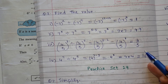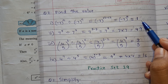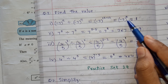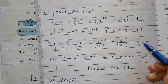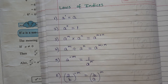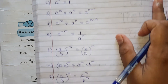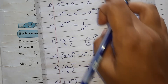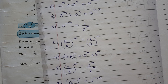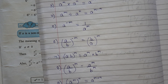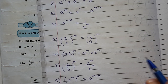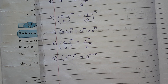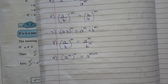When finding the value, there should be no power remaining at the end — solve the multiplication to get the final product. These answers used the laws: anything to the power 0 is 1, and anything to the power 1 is the same number. We have completed 6 laws of indices today. Practice sets 27 and 28 are to be solved in your notebook. Laws 7, 8, and 9 will be covered in the next lecture. Thank you.